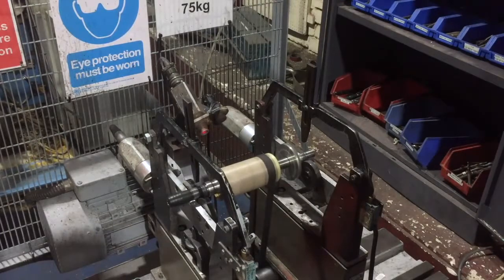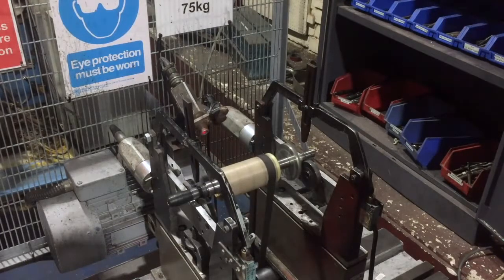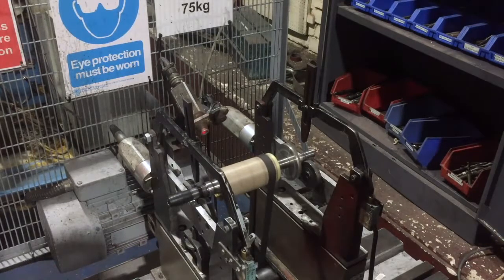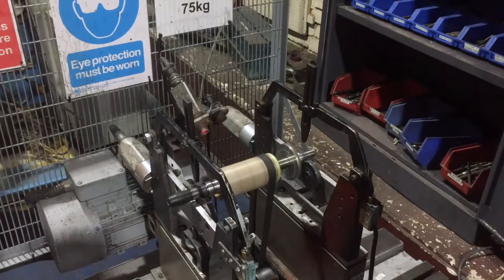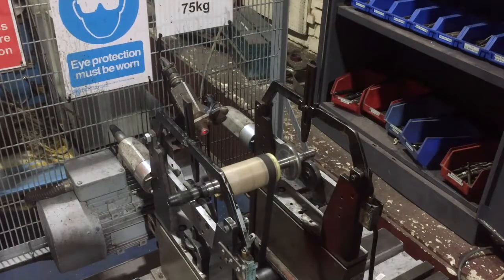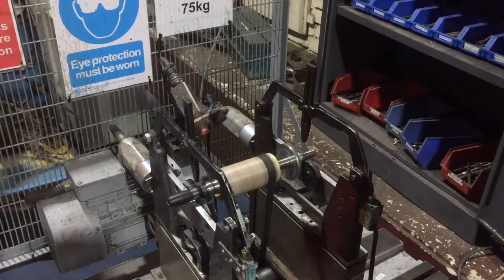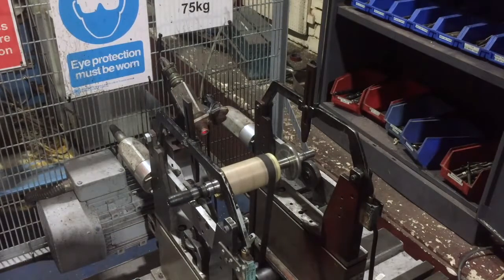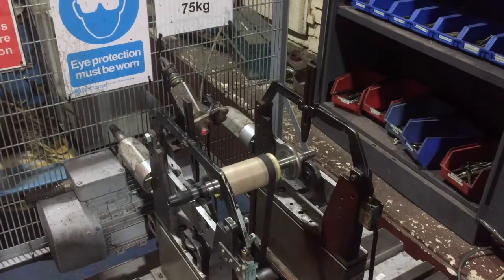This servomotor rotor is now on our balancing machine. Even though there was no report of any imbalance, we always like to check to make sure that we have got the right balance grade. And we always work to grade G 1.0. That is usually one balance grade higher than the manufacturer's standard balance grade. So here the machine is looking for imbalance in two planes, hence dual plane dynamic balancing.